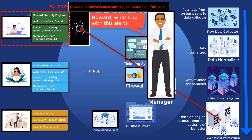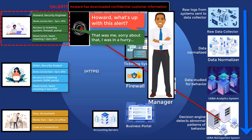Three things could be happening here: Howard intentionally downloaded the information for a legitimate reason; Howard intentionally downloaded it for malicious reasons; or Howard wasn't even aware his account was used to download the customer profile reports. In this case, Howard tells his manager it was him — the customer wanted a history of all their tickets in PDF form and didn't know how to do it from the portal, and Howard was in the middle of a troubleshooting call and quickly did it for them. He acknowledges he should have gone through an approval process.